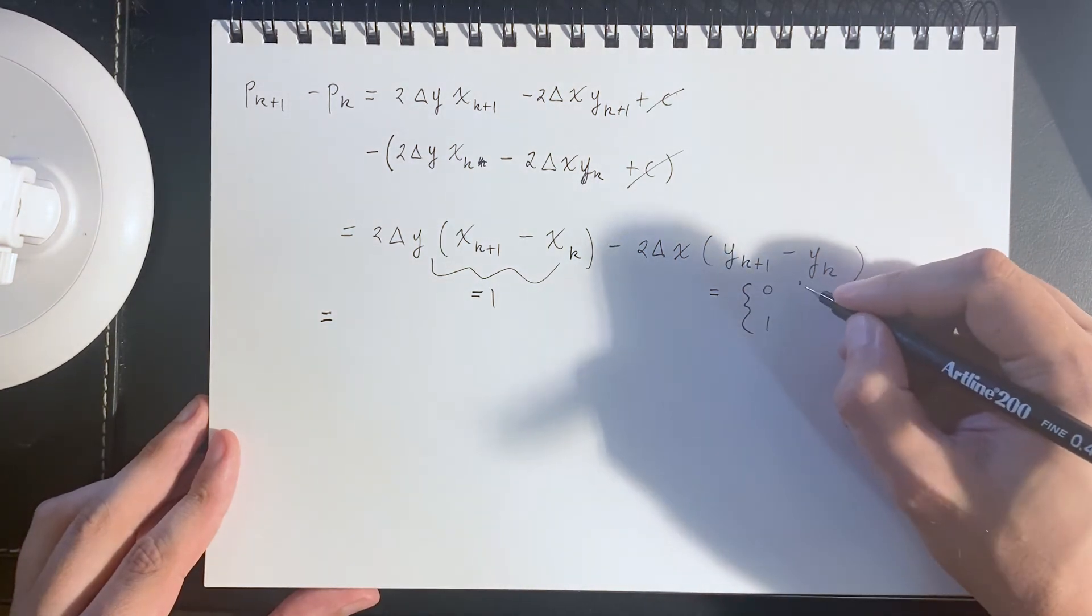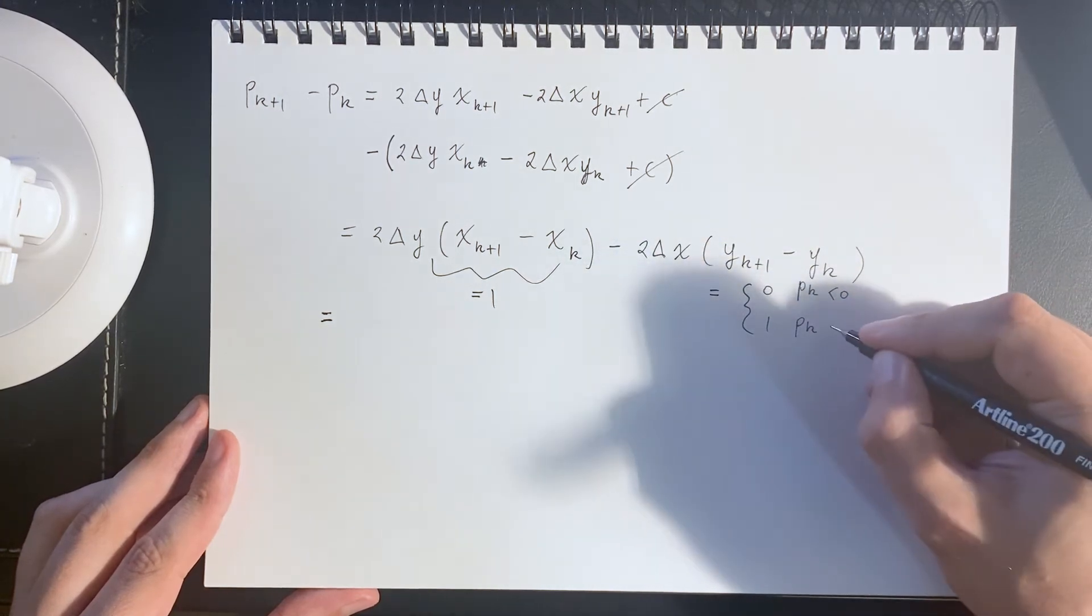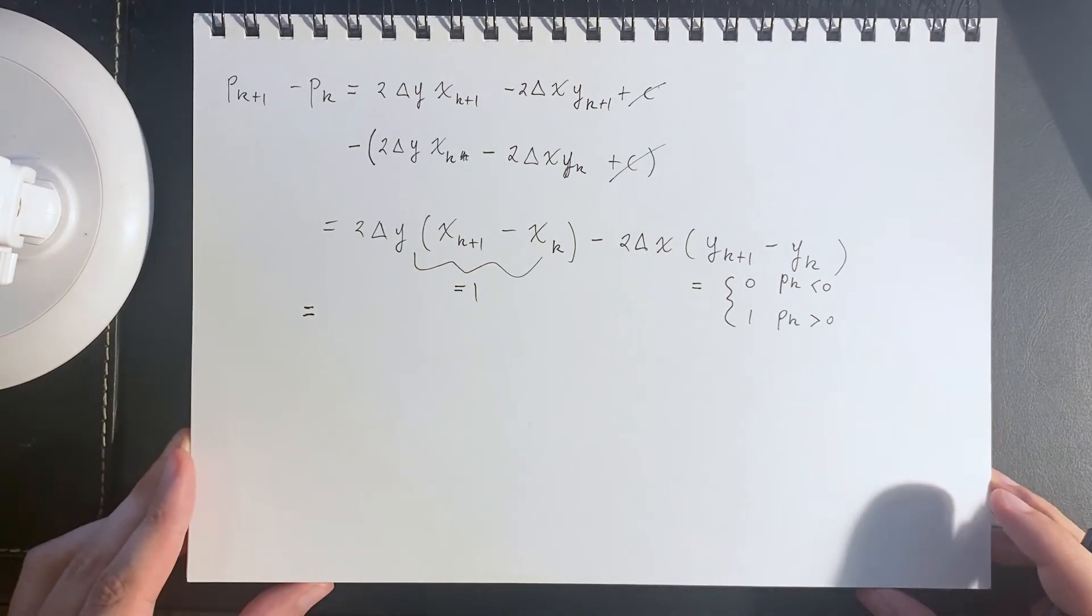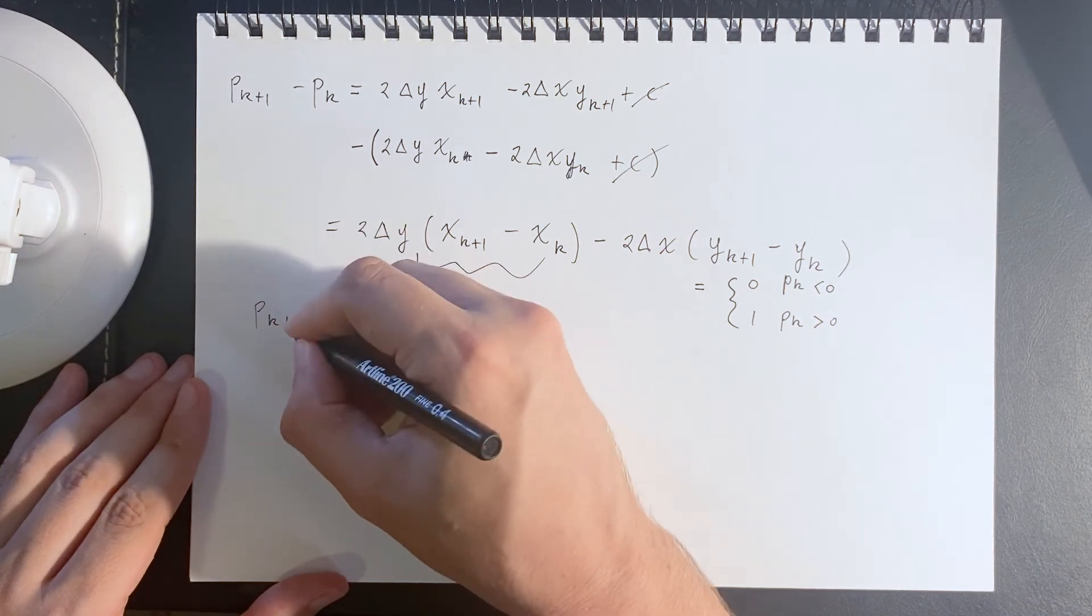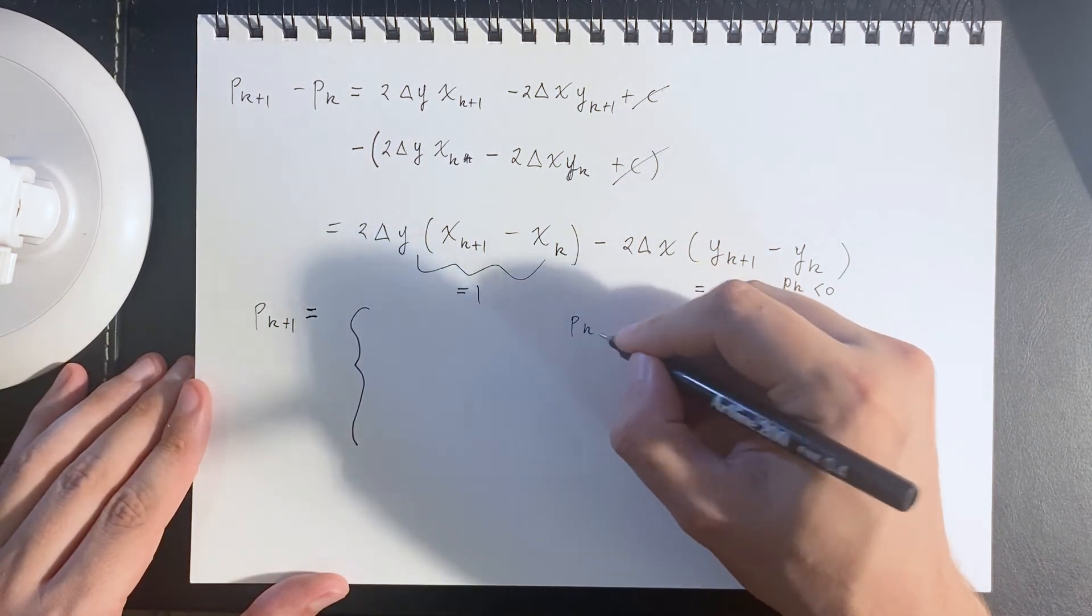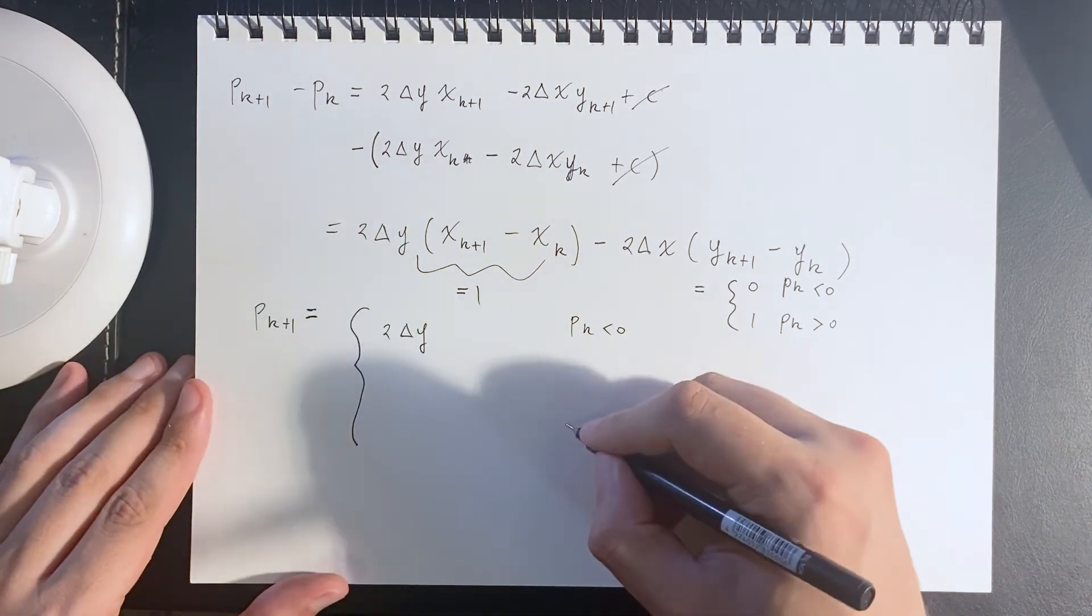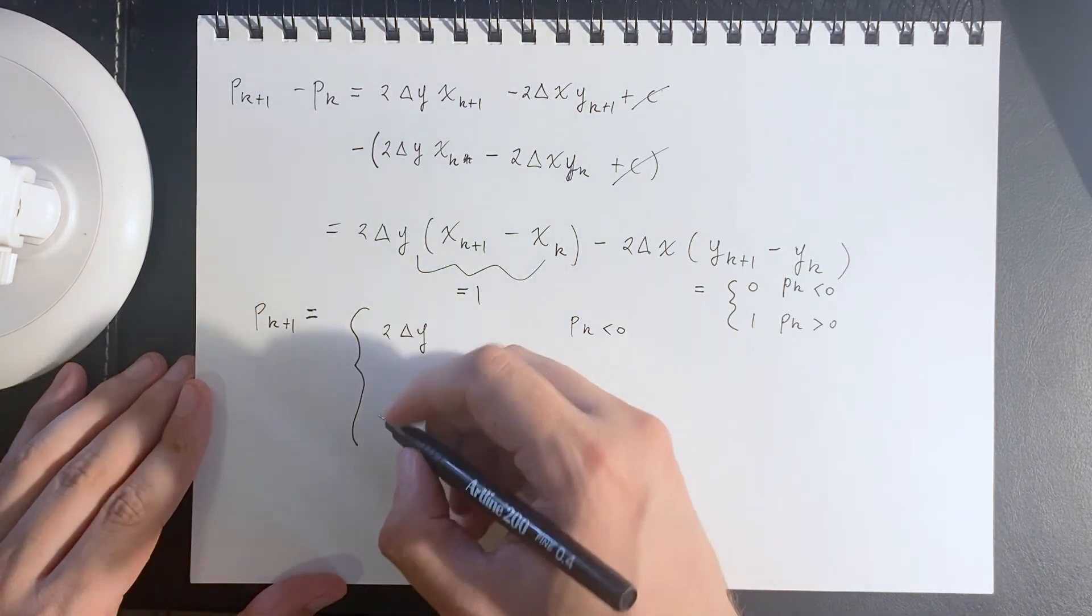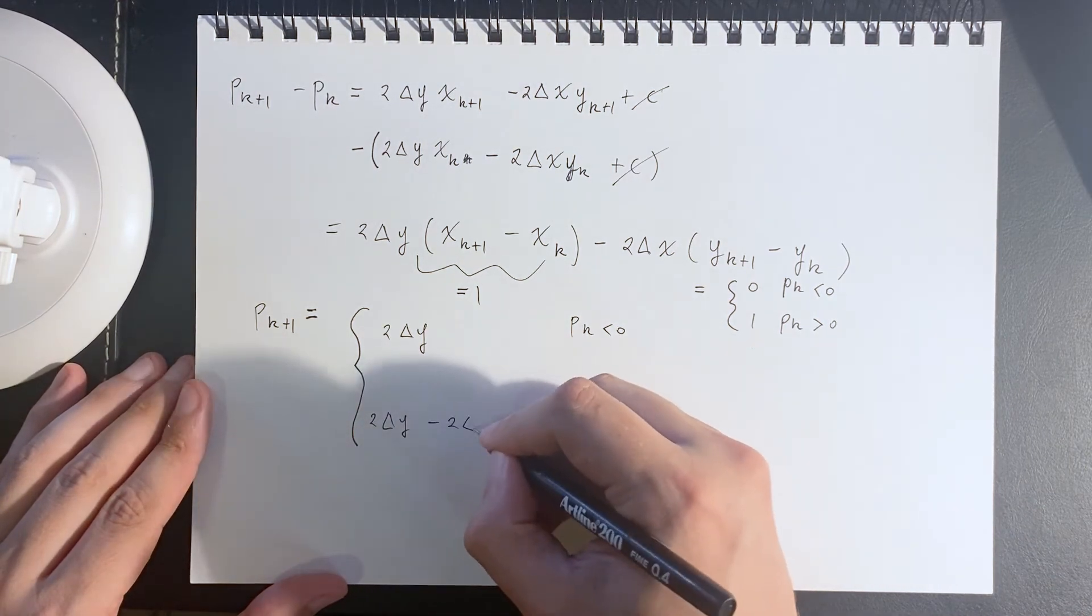It's 0 if p_k is less than 0, and it's 1 if p_k is bigger than 0. So p_k plus 1 is equal to a piecewise function. If p_k is less than 0, then this term is 0 and so it's just 2 delta y. If p_k is bigger than 0, this term is 1, so that is 2 delta y minus 2 delta x.